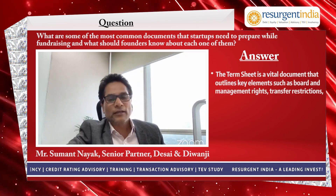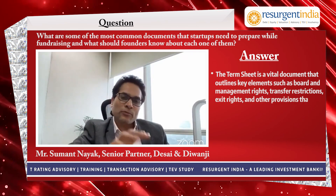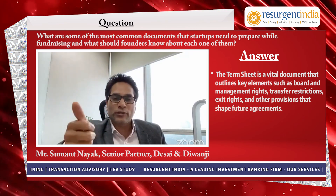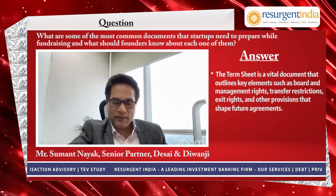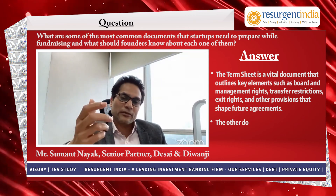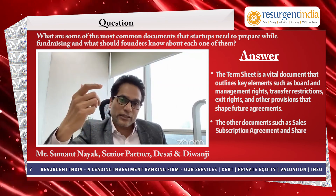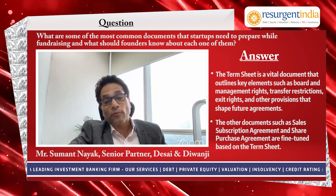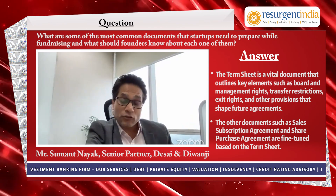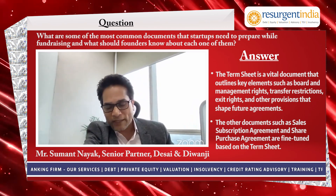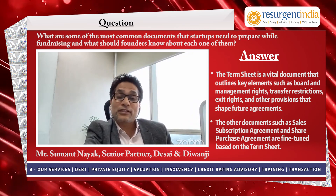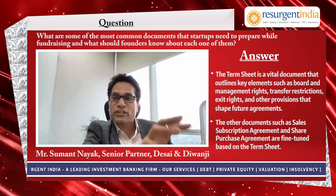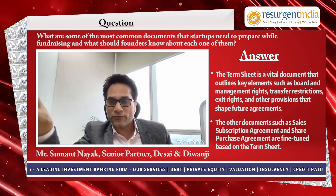Then you go to the term sheet. The term sheet is the document which is the mother document, or the umbrella document, based on which the subsequent documents are fine-tuned and made — like your share subscription agreement and shareholders agreement. Those documents emanate from the term sheet. The term sheet, although sometimes may not be binding, is a very crucial document for the times to come, because this will shape your future agreement.